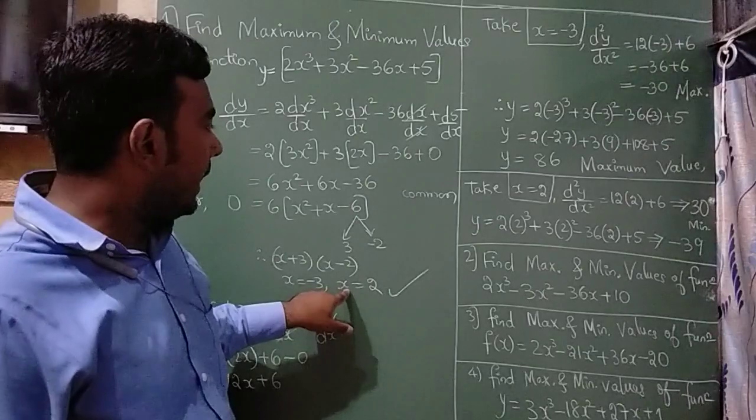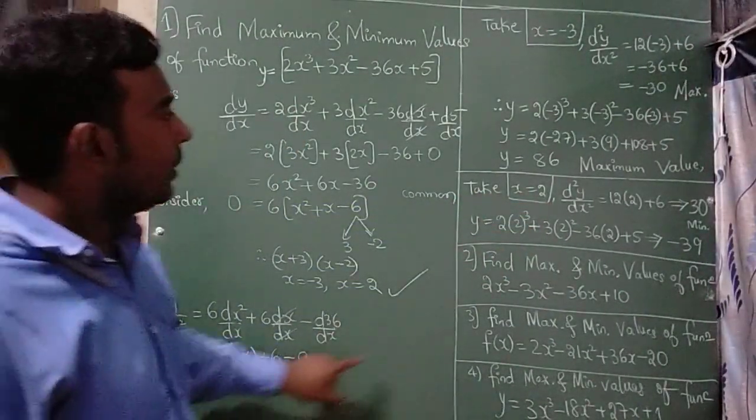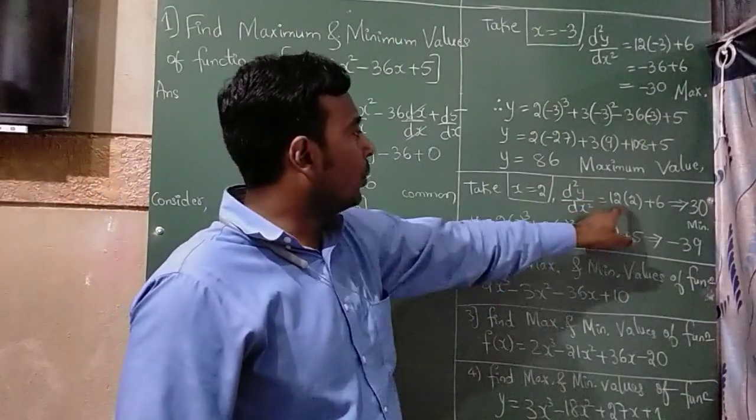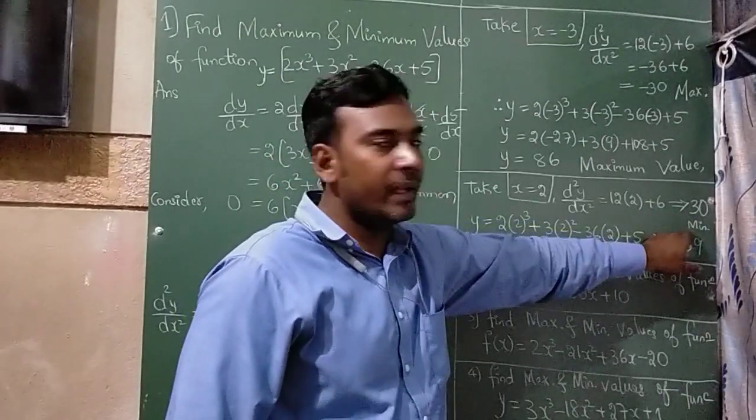The next is, take x = 2. In double differentiation value, you have to substitute 2. So 12 times 2 is 24 plus 6 is 30. So this is your minimum.